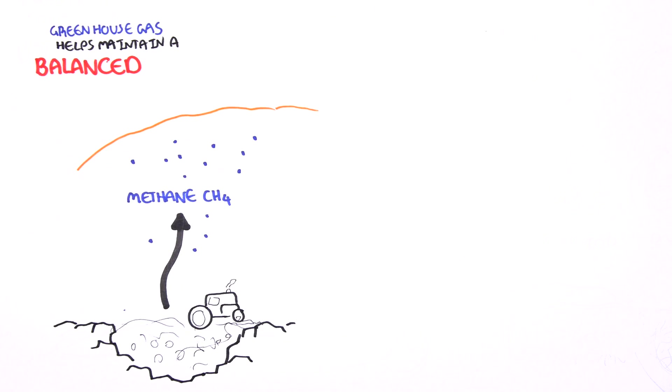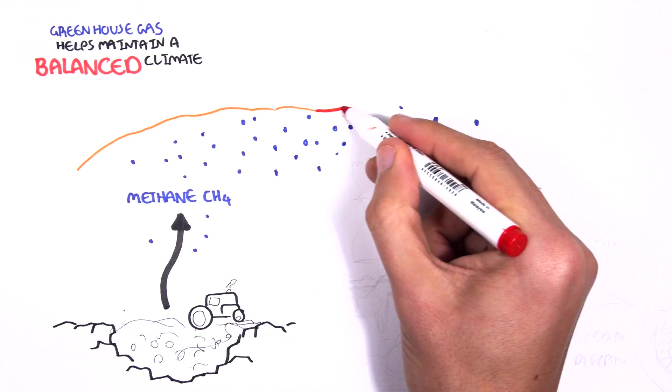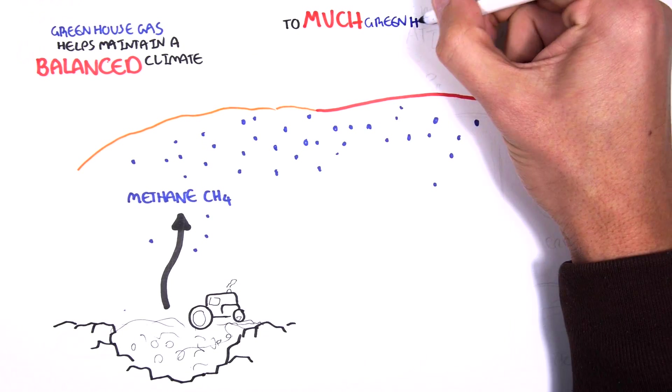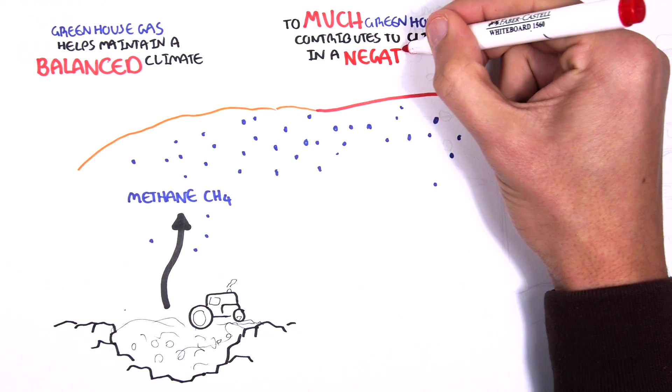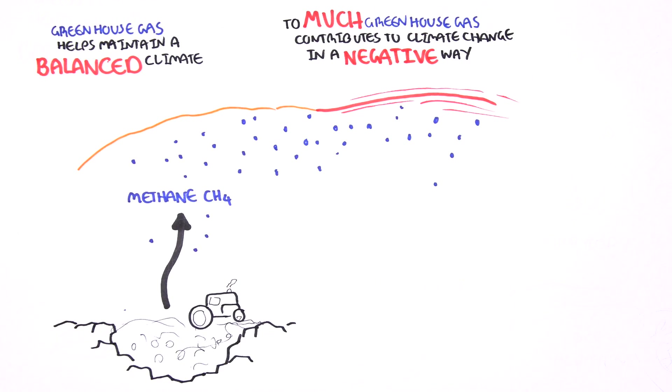Together with other gases such as carbon dioxide, it helps maintain a balanced climate. Without this natural greenhouse effect, the earth would be much colder than it is now. However, too much greenhouse gas contributes to climate change in a negative way.